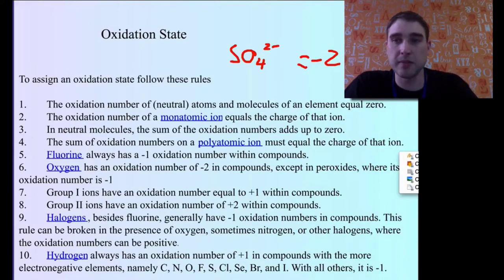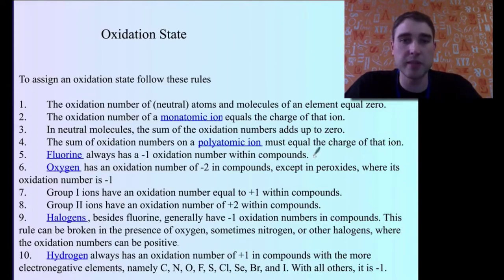Then we're going to very specific examples. Fluorine is always minus 1. Oxygen is always minus 2 except in peroxides. Group 1 ions are always plus 1. Group 2 ions are always plus 2.